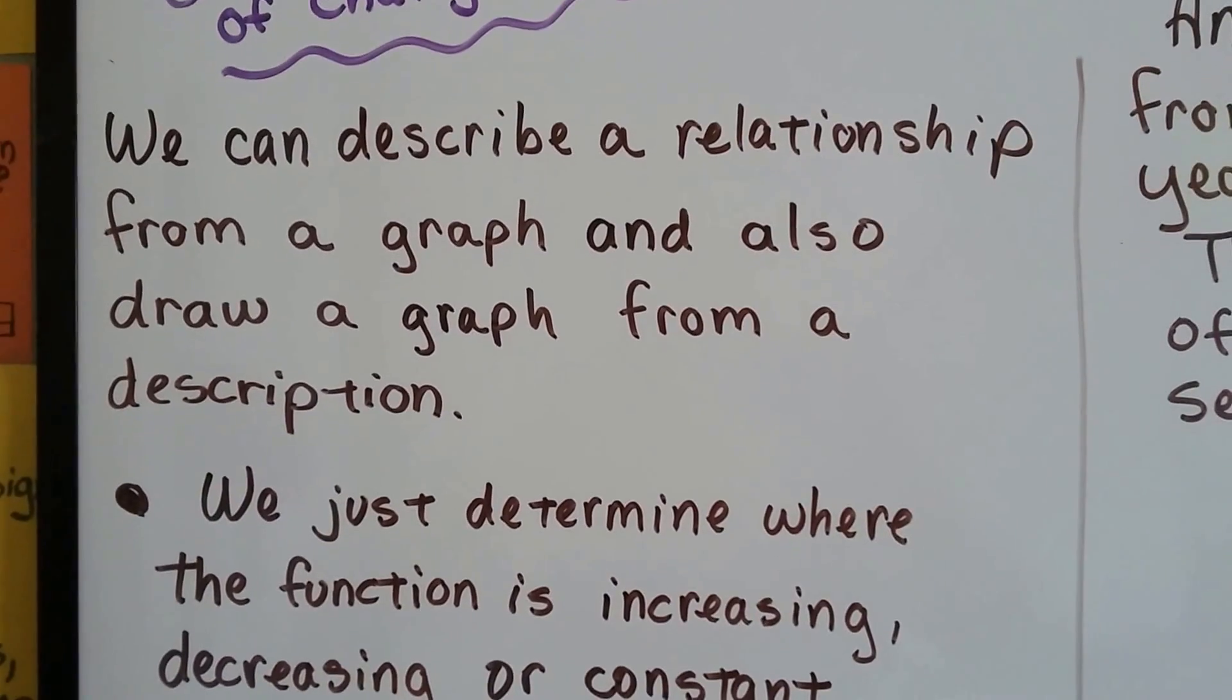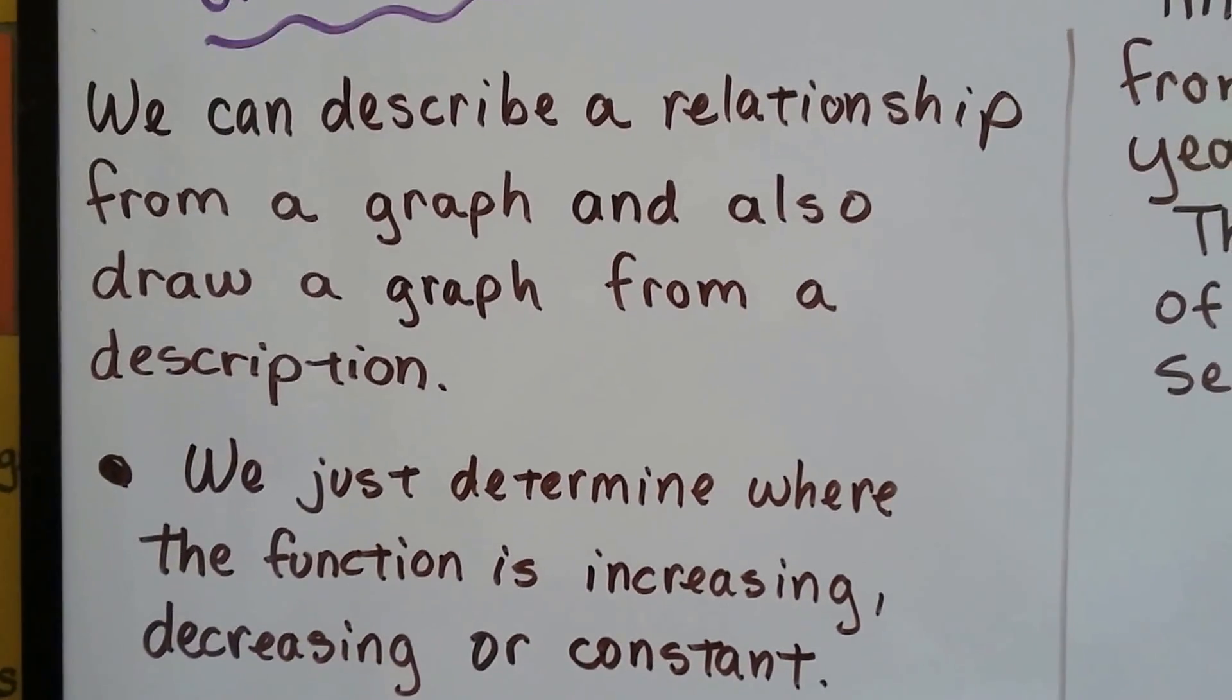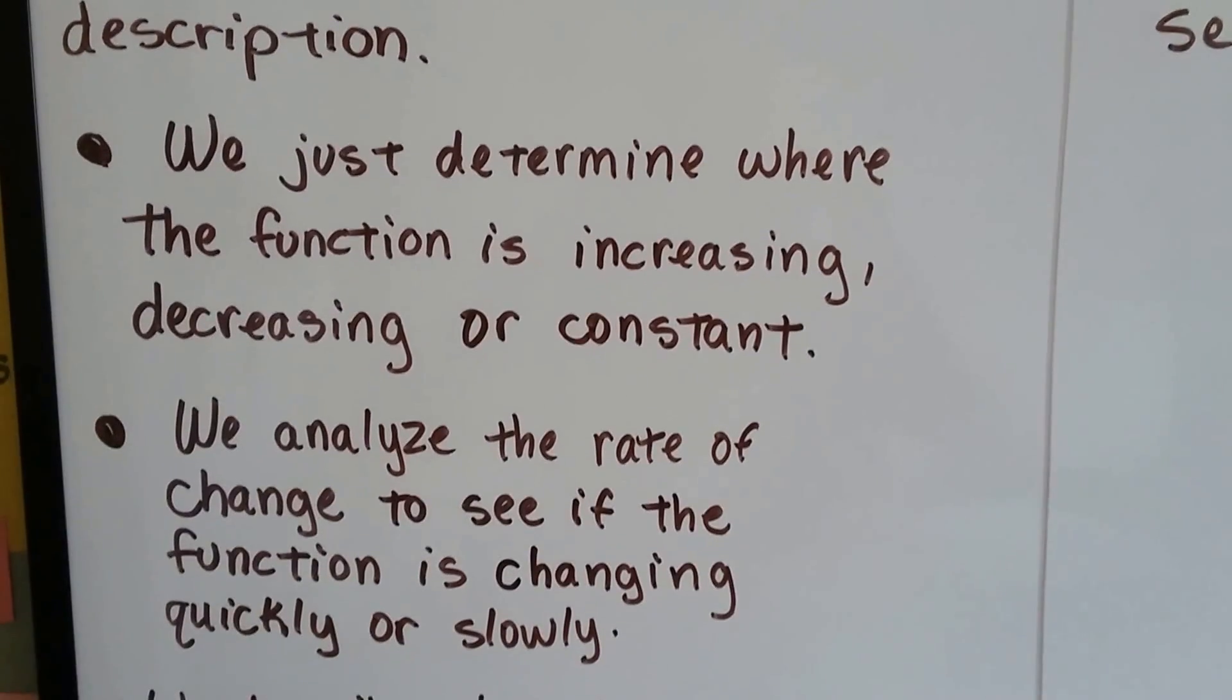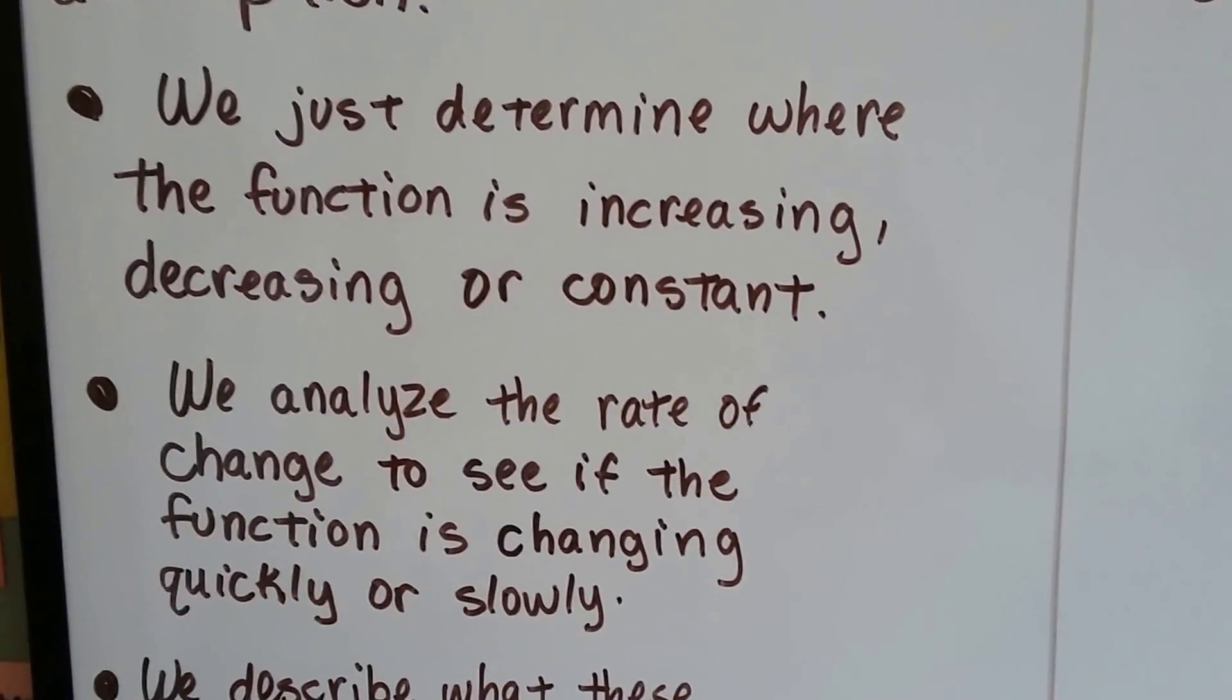We can describe a relationship from a graph. We can also draw a graph from a description. We've done it. We just determine where the function is increasing, decreasing, or constant.